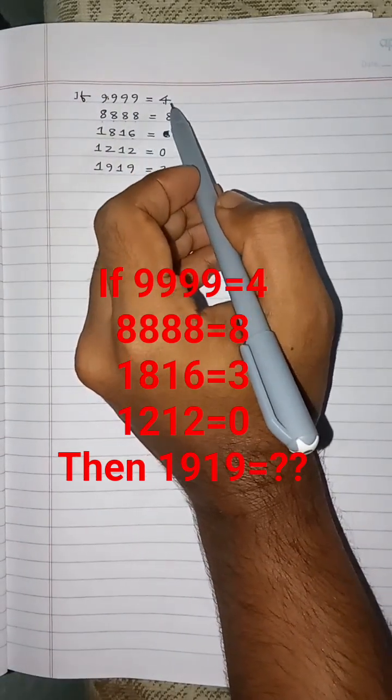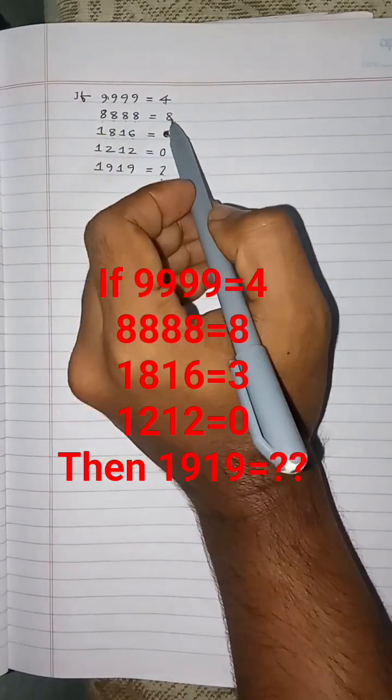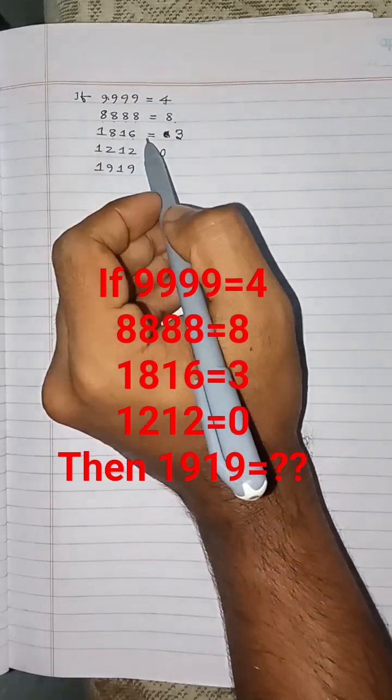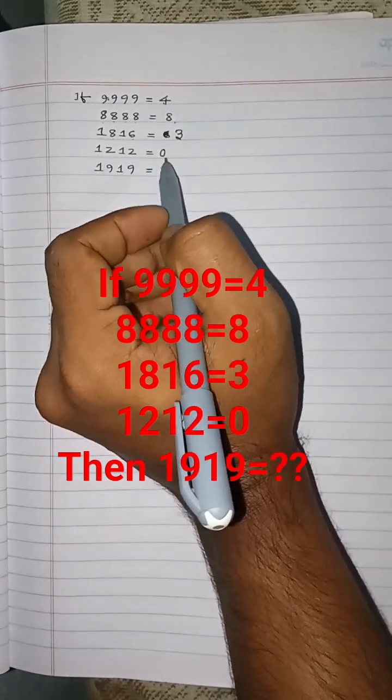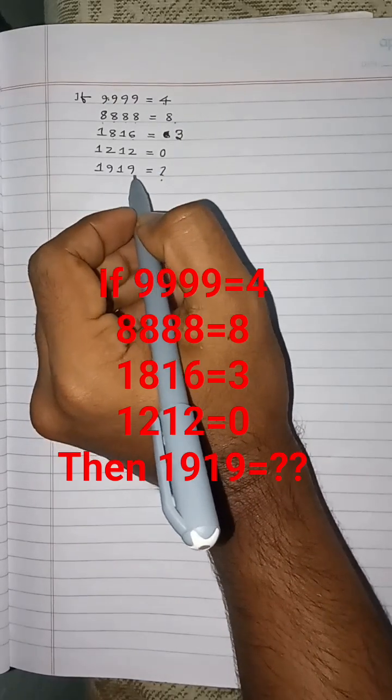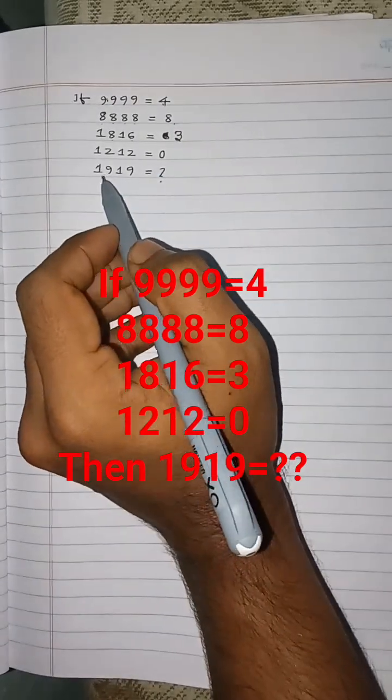If 9999 equal 4, 8888 equal 8, 1816 equal 3, 1212 equal 0, 1919 equal what? How to solve this?